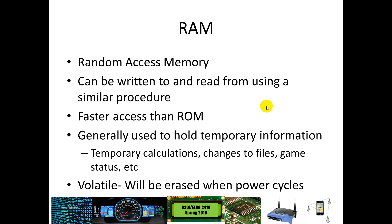RAM — every computer you buy has RAM. This is what allows you to store temporary data, intermediate calculations, things like your most recent browser access, and unsaved changes to word processing documents or other productivity work. This is good for fast access. RAM is much faster to access than ROM, so it's great for temporary information like a current state in a game. The problem with RAM is that it is volatile — so if the power goes out, everything in RAM that is not backed up to another kind of storage does go away.